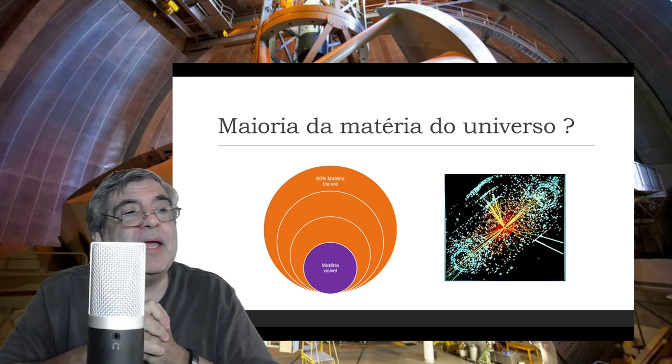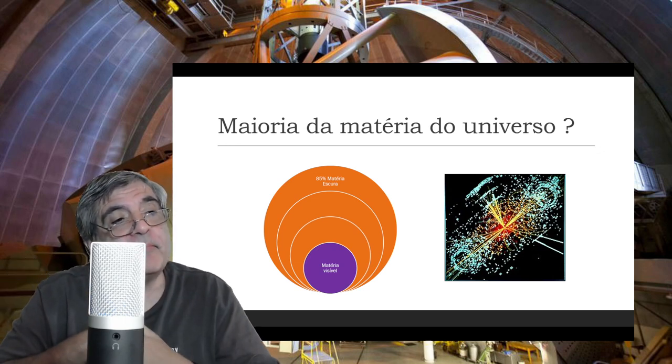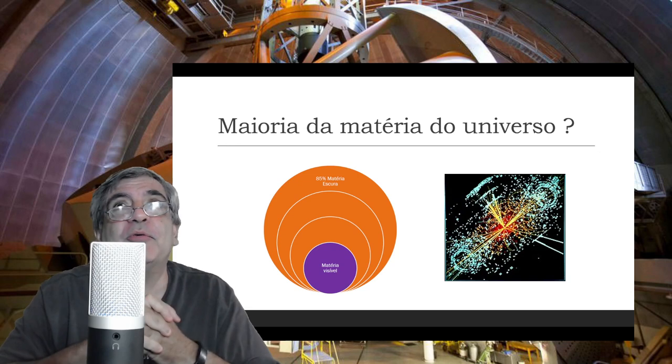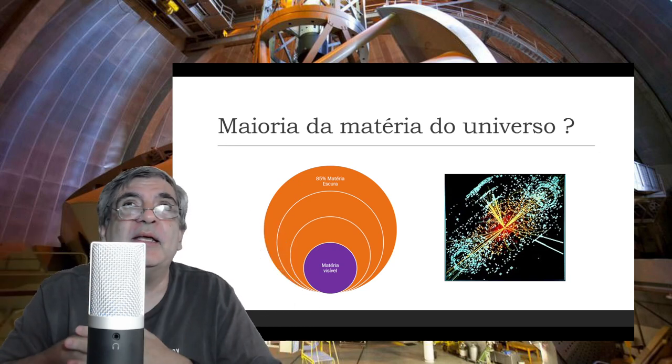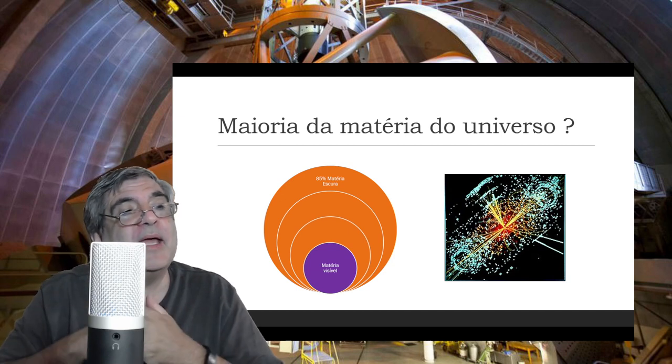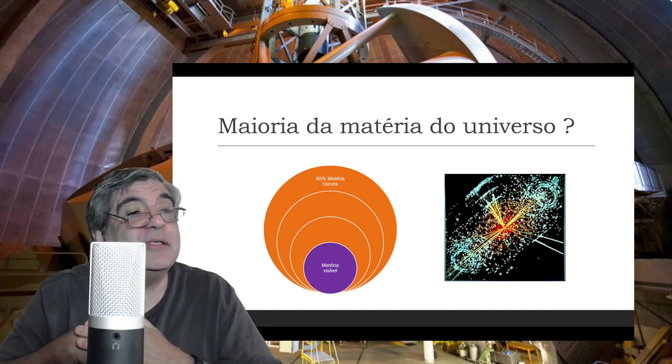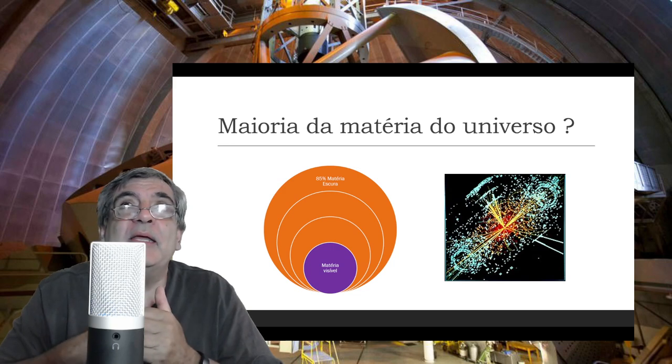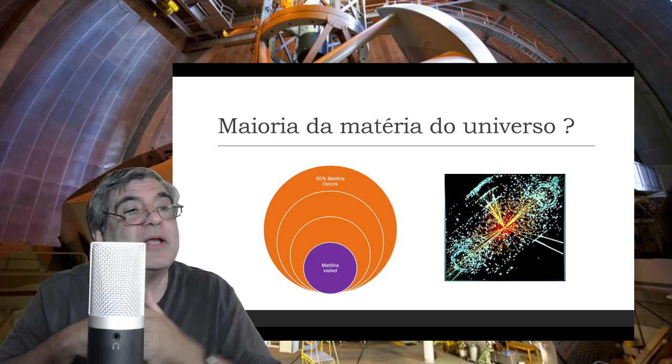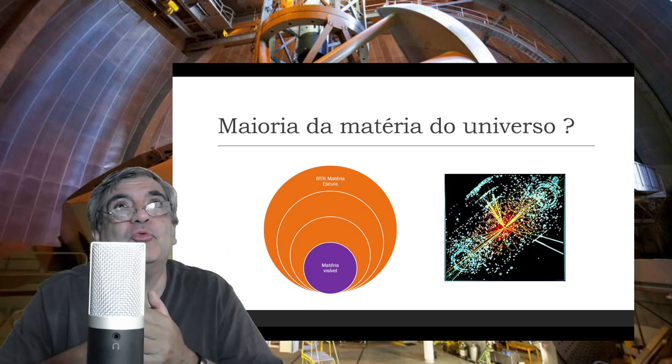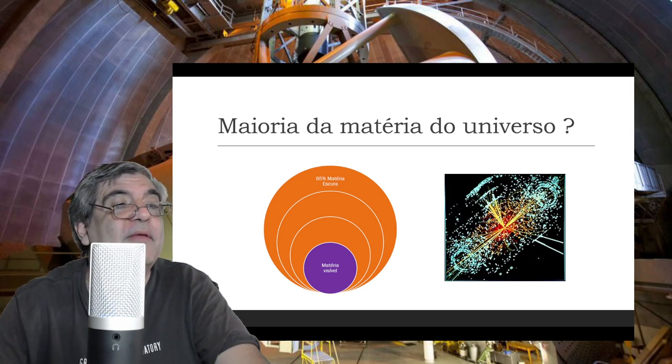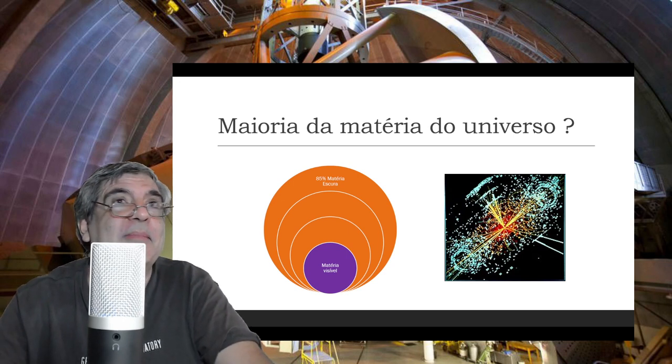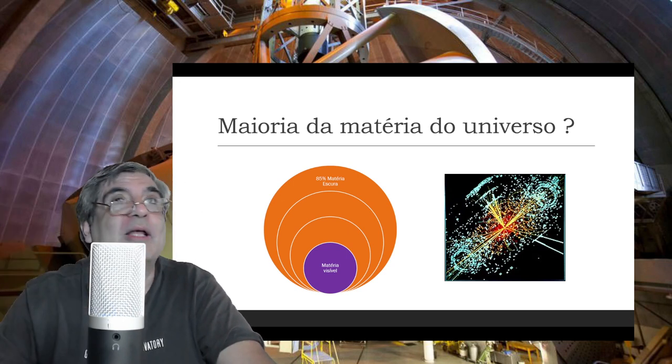Isso que nós vemos à direita é o LHC, que é o acelerador de partículas, onde a gente tenta também, depois da descoberta lá do bóson de Higgs, a gente tenta furar esse modelo padrão da mecânica quântica, e tentar ver se a gente consegue encontrar alguma explicação em termos de partículas da origem dessa matéria escura. Até agora o resultado disso é negativo. A gente nunca encontrou nenhuma evidência material dessa matéria escura, exceto os resultados observacionais.